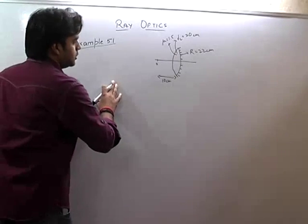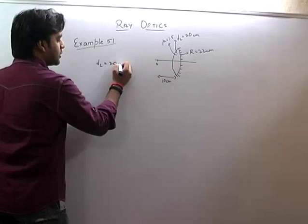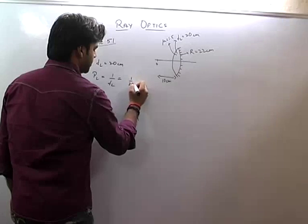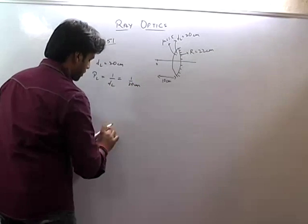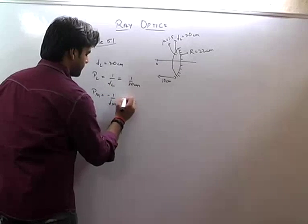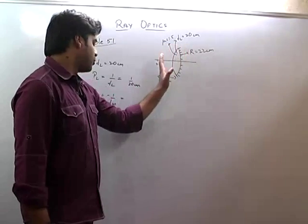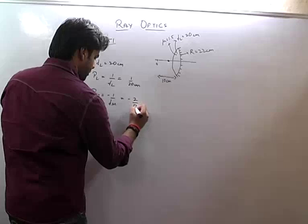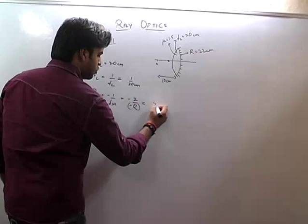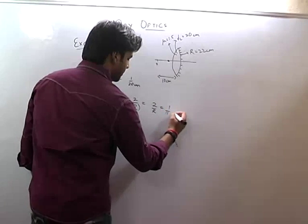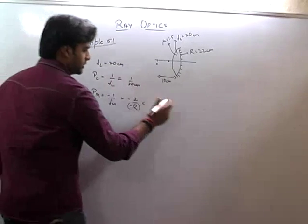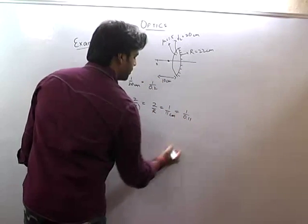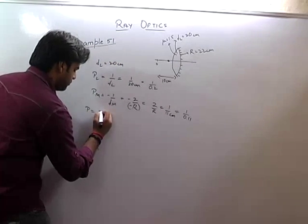So f_L = 20 cm, therefore P_L = 1/f_L = 1/0.2 m. For the mirror, P_M = -1/f_M. The focal length of the mirror is f_M = -R/2 = -22/2 = -11 cm, so P_M = 1/0.11 m. The total power is P = P_L + P_M + P_L = 2/0.2 + 1/0.11.